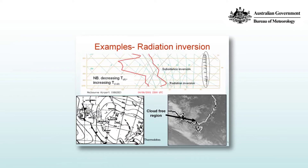Here's an example of a radiation inversion below a subsidence inversion at about 820 hPa, and the radiation inversion goes up to about 950 hPa in this case. You can see in the bottom left that there's a high in the Tasman Sea ridging across Victoria, producing a light northerly drift at the surface, and the cloud image shows that it's largely cloud free over the Melbourne area.